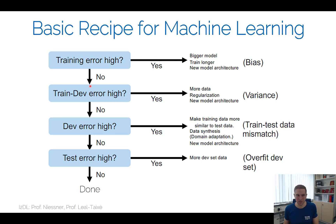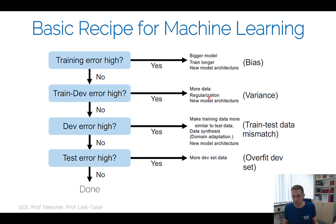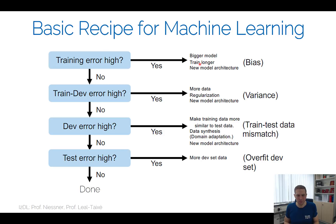Assuming training error goes down, check the generalization — the gap between training and validation error. If that gap is high, you're overfitting. Solutions: more data, regularization, or a smaller model architecture. But notice the conflict: reducing underfitting needs a bigger model while reducing overfitting needs a smaller model. The practical balance is to use a very big model but with more data, and use regularization to prevent overfitting.